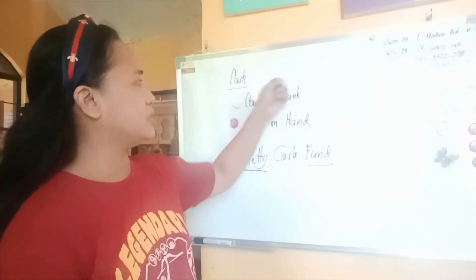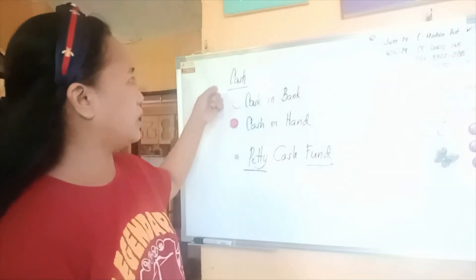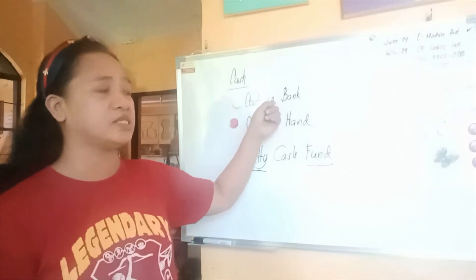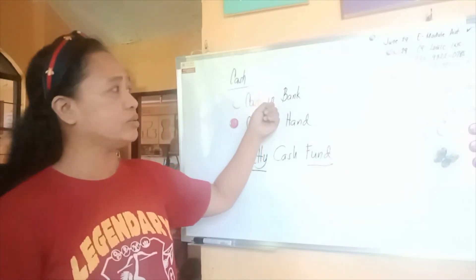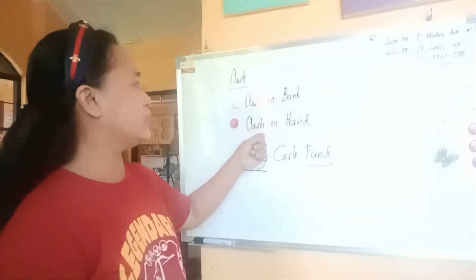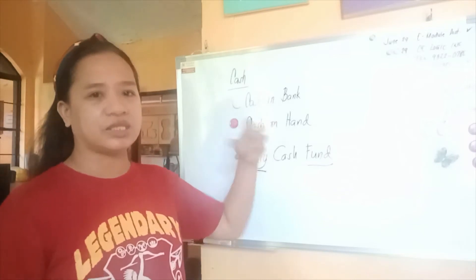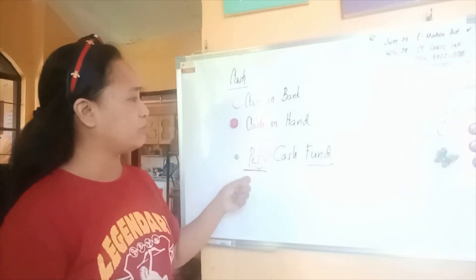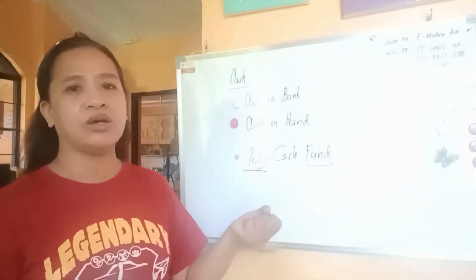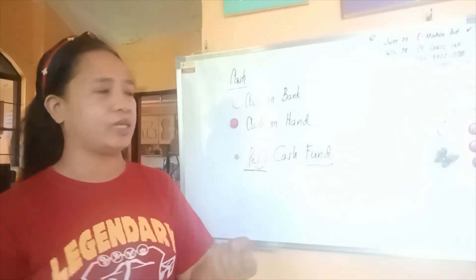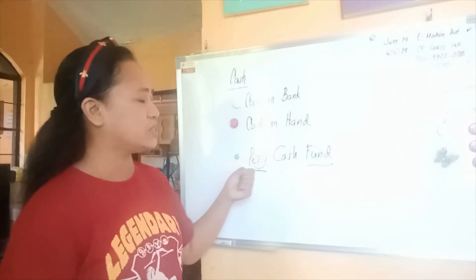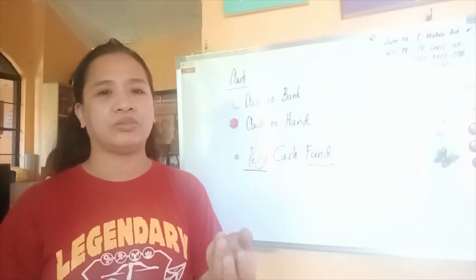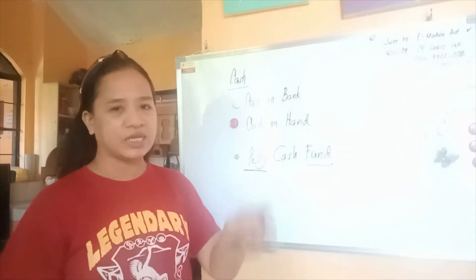These are the differences between the types of cash. We have cash in bank — which can be a savings account, checking account, or time deposit account. Cash on hand is the money you have that is not yet deposited. And petty cash fund is a small or minimal fund used to cover minimal disbursements on a daily basis.